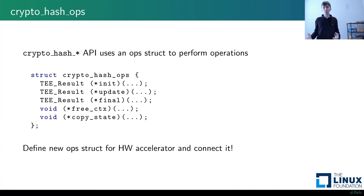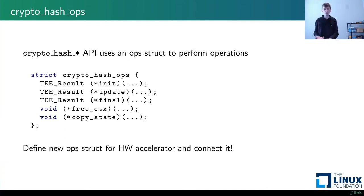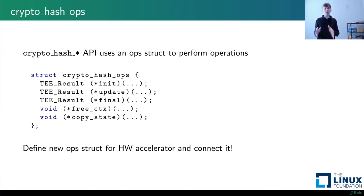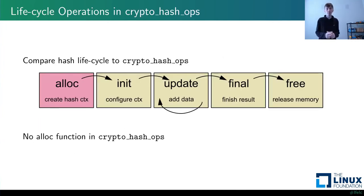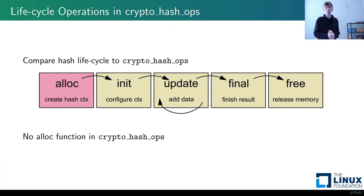When we call crypto_hash_init on a hash context, it looks up the crypto_hash_ops struct and calls the init function pointer. Similarly for crypto_hash_update — it looks up the ops struct and calls update. So to implement a hardware accelerator, we fill out a crypto_hash_ops struct with function pointers to our hardware-based functions, and get the crypto system to use that ops struct. However, there's no alloc function in the crypto_hash_ops struct, so we need to understand how allocation is handled separately.